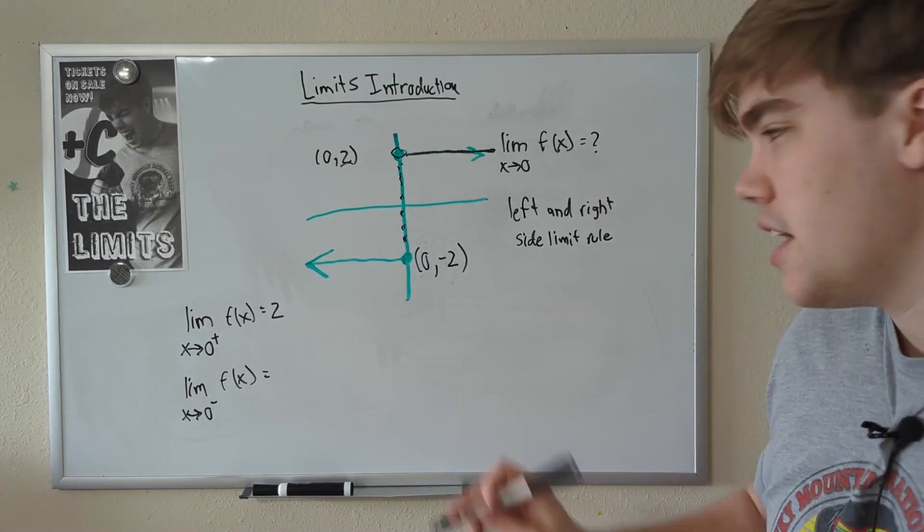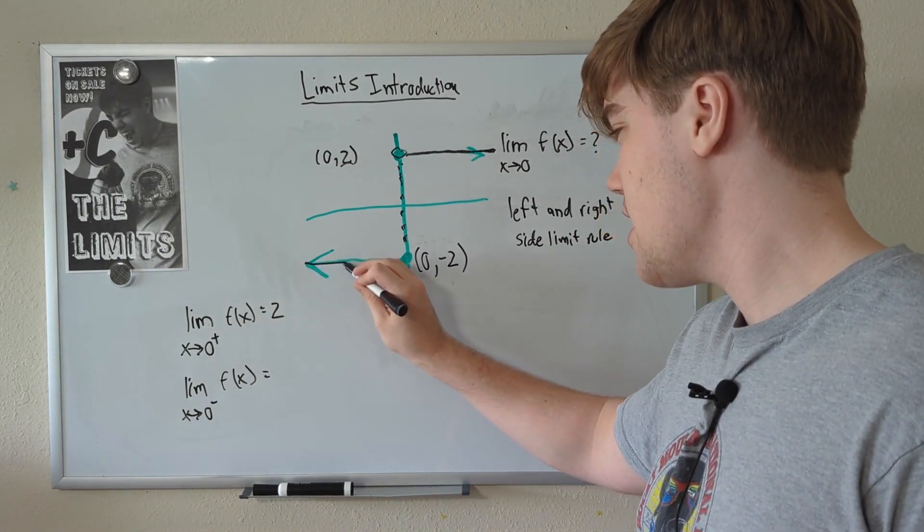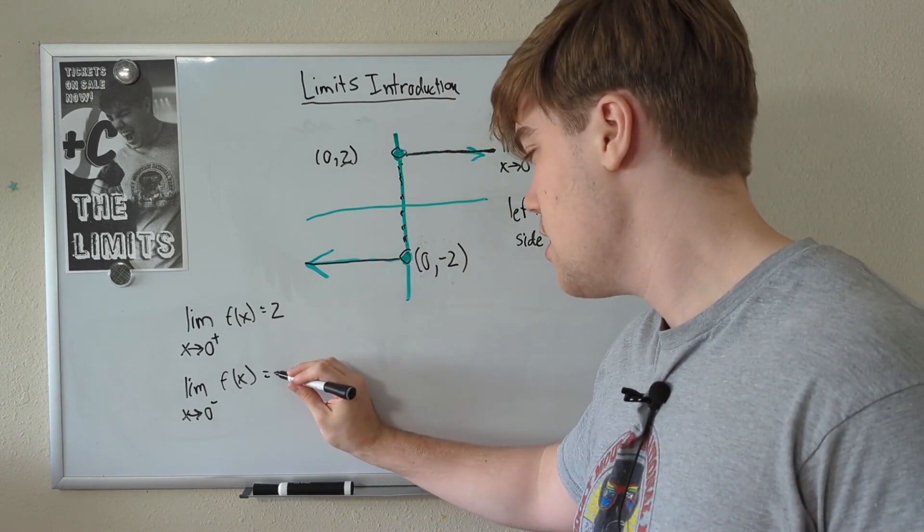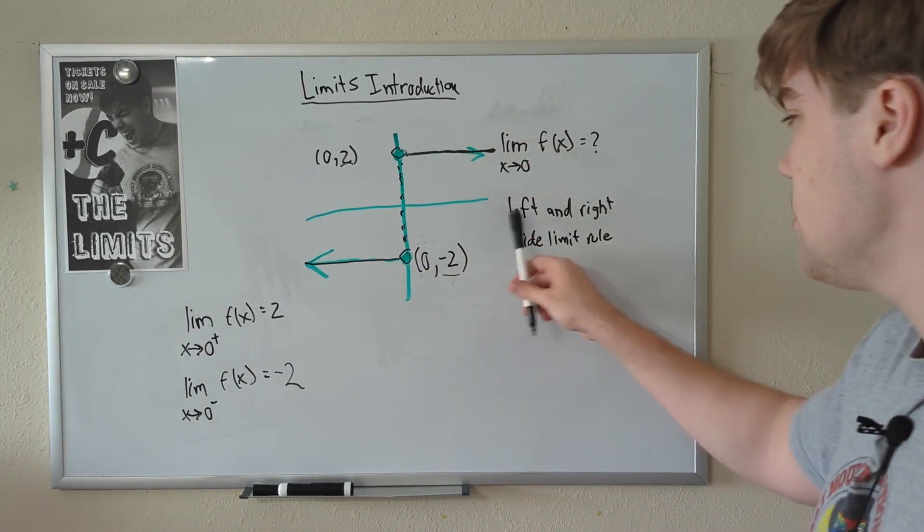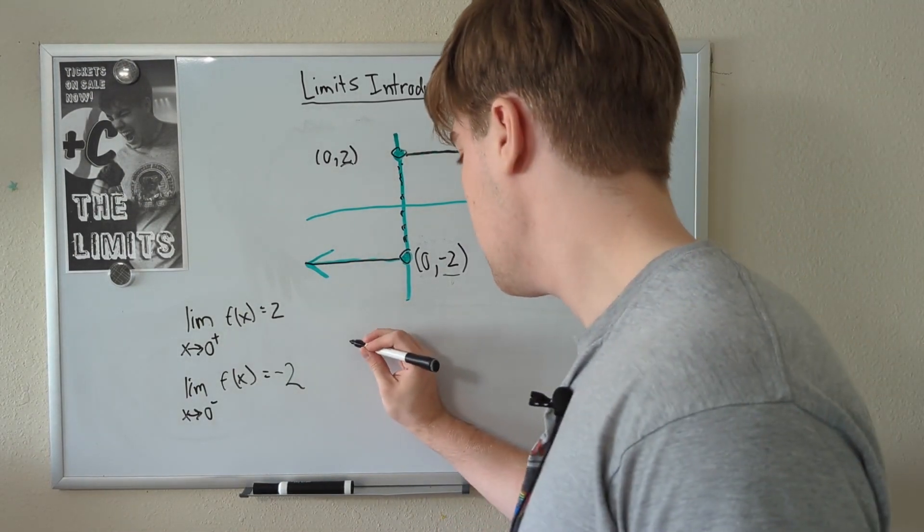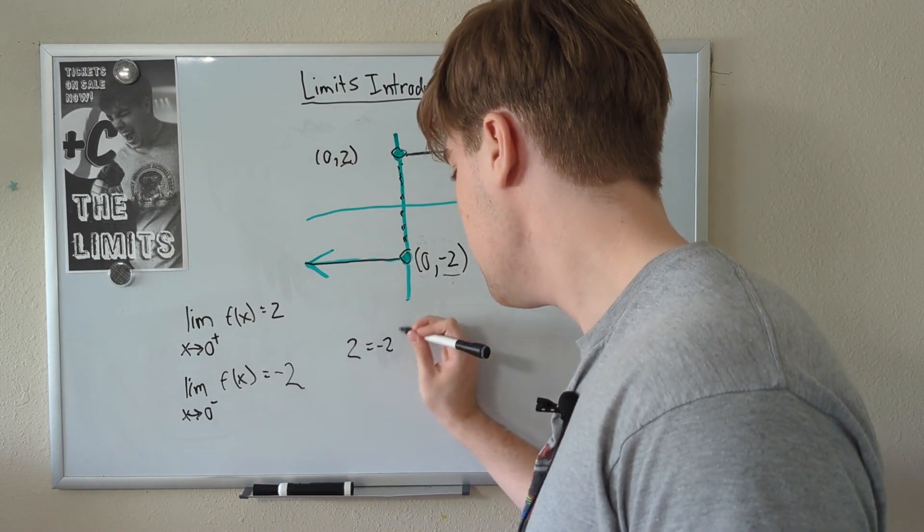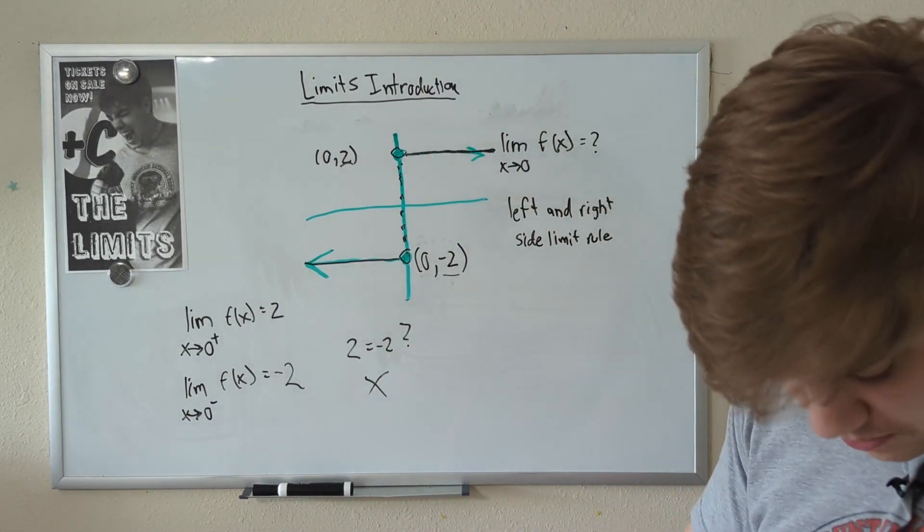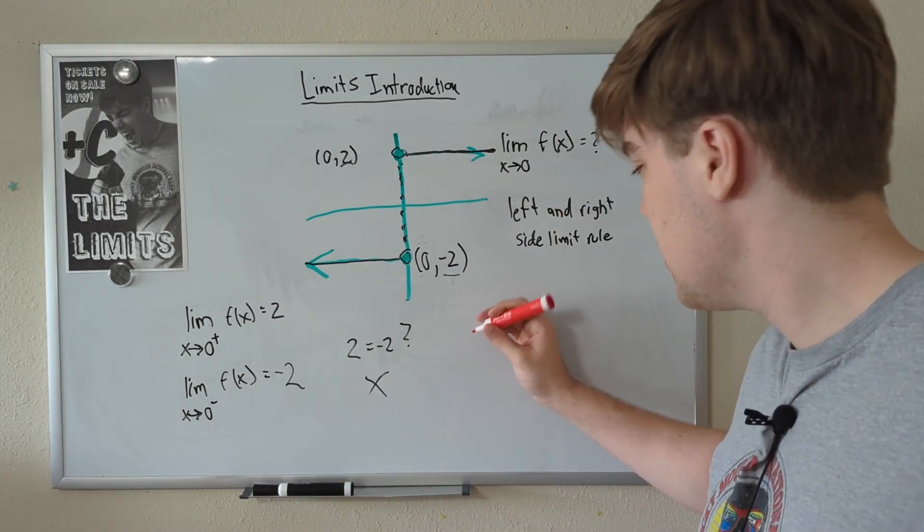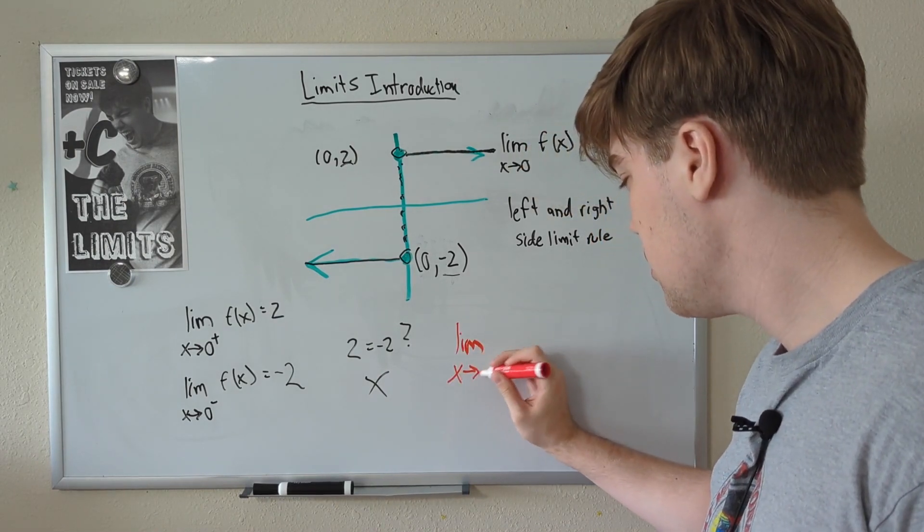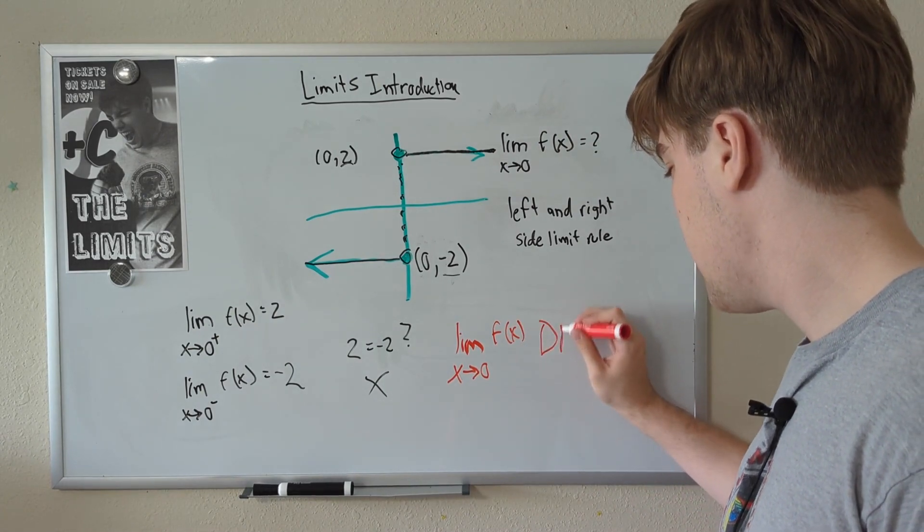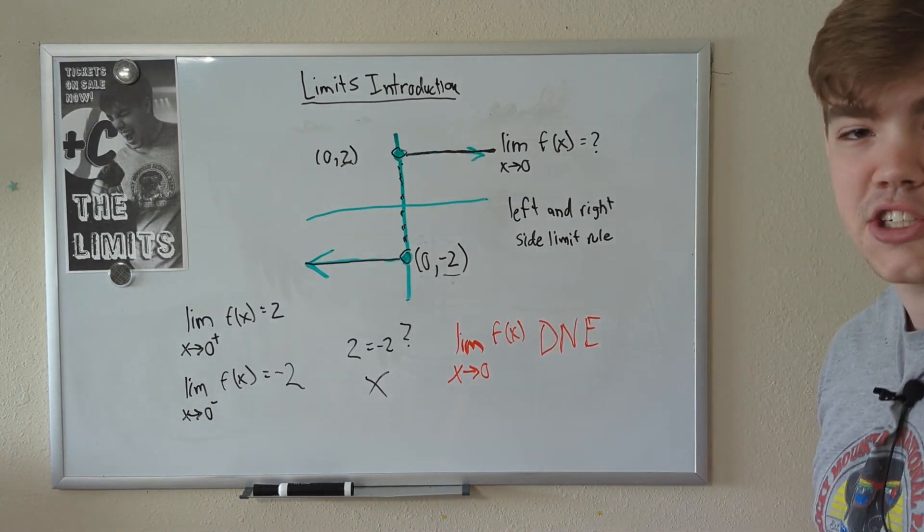Now let's do it from the negative side. Starting at negative infinity, coming closer and closer to x equals 0. As we get closer and closer, our y gets closer and closer to equaling negative 2. Now remember what I said earlier. The left and right side limits have to be the same in order for the limit to exist. So, does 2 equal negative 2? No, of course not. They're not the same number at all. So, the answer to this question is not an answer at all. The answer is that the limit as x approaches 0 of this function does not exist. Or DNE for short.